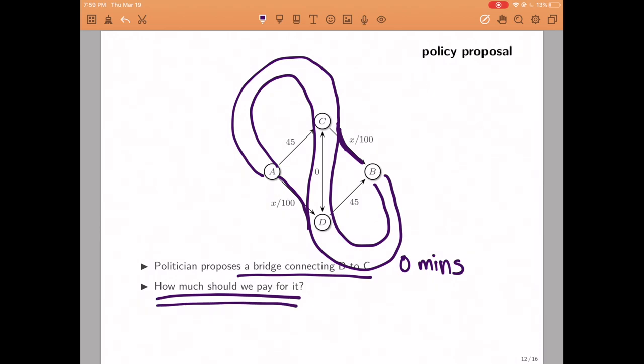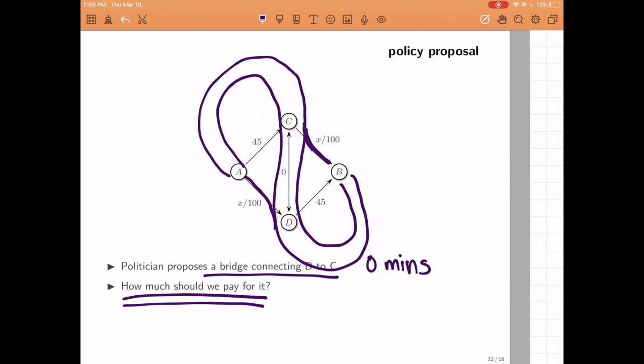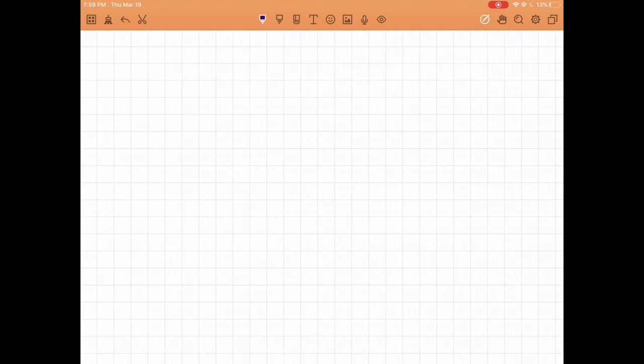So how much should we pay for it? Well, in order to answer that question, we need to figure out what would be the effect that it would have on traffic. So let's go ahead and try to analyze, under the same assumption that people are choosing the fastest route given existing traffic patterns, let's try to figure out which route people would choose once we build this bridge.